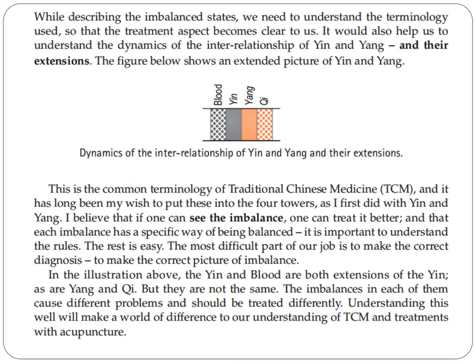We have the figure below which shows the extended picture of yin and yang. First, we have the blood, the yin, the yang, and the qi. This is the common terminology in traditional Chinese medicine, and it has long been the authors' wish to put this into four towers as first done with yin and yang. If one can see the imbalance, one can treat it better, and each imbalance has a specific way of being balanced.